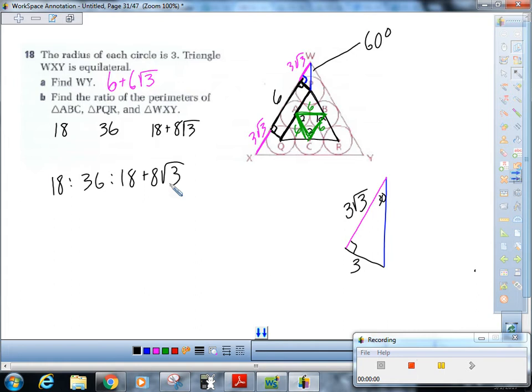So the ratio of the perimeters would be 18 to 36 to 18 + 8√3. I think the best we can do is divide it by 2, because this is not divisible by 3. So you'd have 9 to 18 to 9 + 4√3, and that should be the answer.